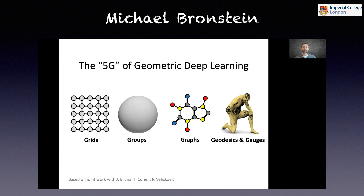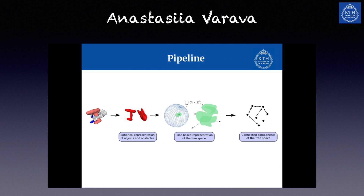Anastasia Barrava: Given an object and an obstacle represented as meshes, we first construct their spherical representations. We represent both the object and the obstacle — in this case, a Schunk hand and a model of a drill.